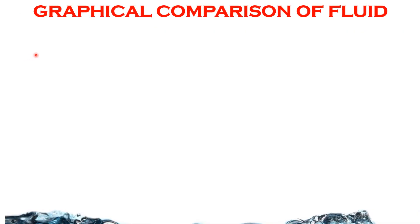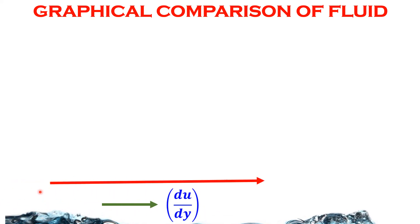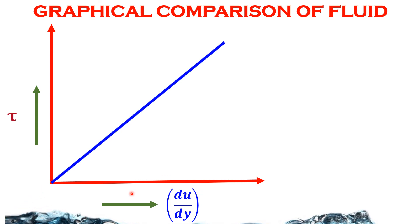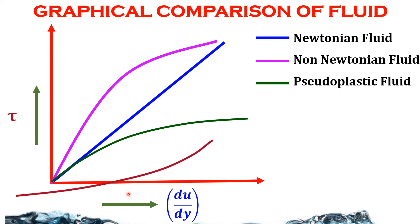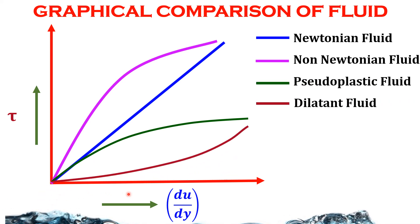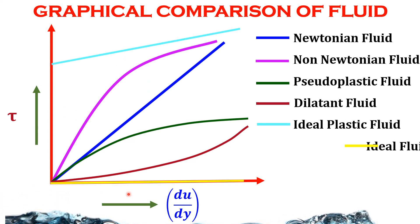The profiles of different fluids are compared in the graph below. The graph is between velocity gradient and shear stress, showing Newtonian fluid, Non-Newtonian fluid, Pseudoplastic fluid, Dilatant fluid, Ideal Plastic fluid, and Ideal fluid. Ideal fluid is an imaginary fluid.